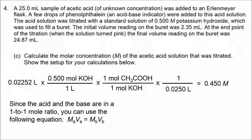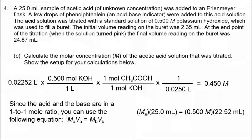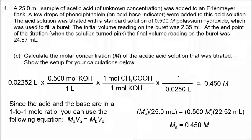Here, with a one-to-one ratio, we can use: molarity of acid times volume of acid, 25.0 milliliters, equals molarity of base, 0.5, times the volume of the base. We get the same answer. So just remember that in a one-to-one mole ratio between acid and base, you are allowed to use M times V equals M times V.